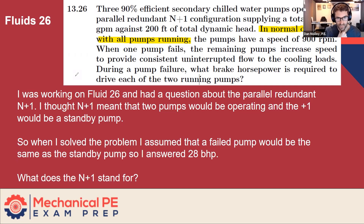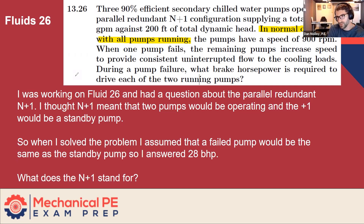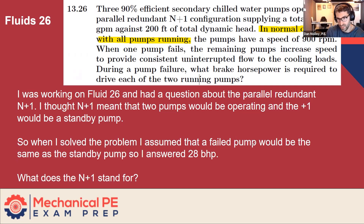We have parallel redundant N plus one. I thought N plus one meant that two pumps would be operating and the plus one would be a standby pump. That's not what was intended here. What was intended was all pumps running in normal operations — running at partial speed, at two-thirds speed. When I saw that, I assumed the failed pump would be the same as a standby pump. If that assumption were true, I would agree. But it's not standby — it was all pumps running.